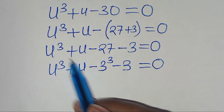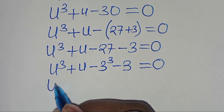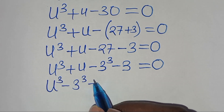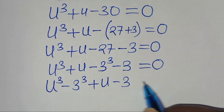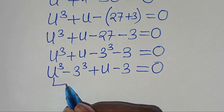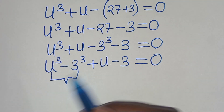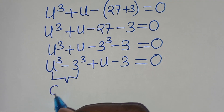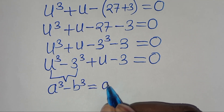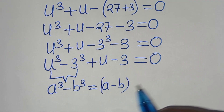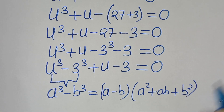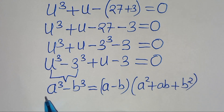We have u to the power of 3 and 3 to the power of 3, so we can express this as u to the power of 3 minus 3 to the power of 3, then plus u subtract 3. This is equal to 0. Now this part is the difference of two cubes, which we can express as a³ minus b³, equal to a minus b times a squared plus ab plus b squared. Let's apply this identity.